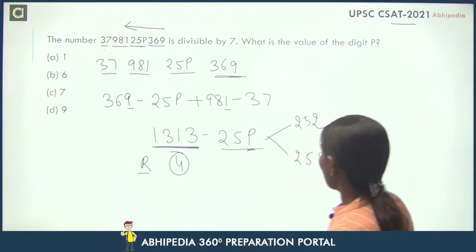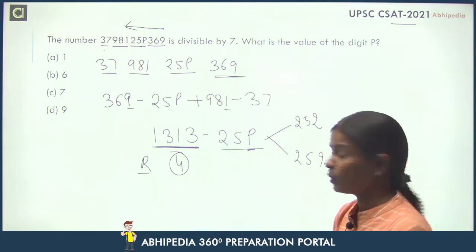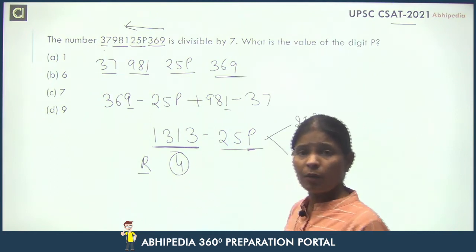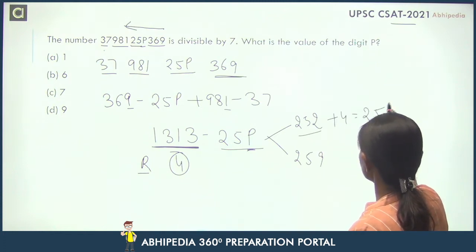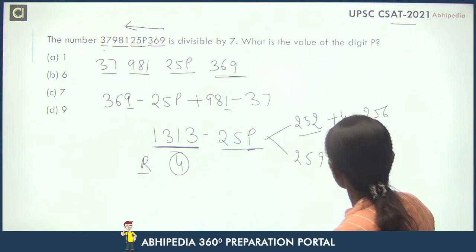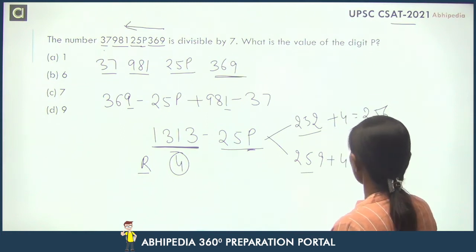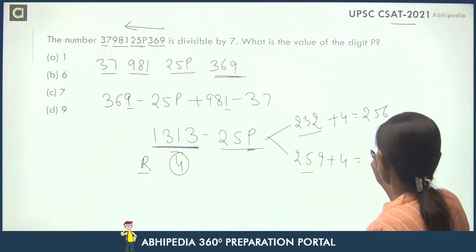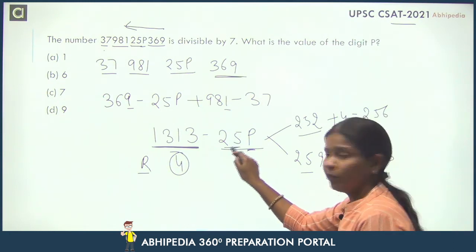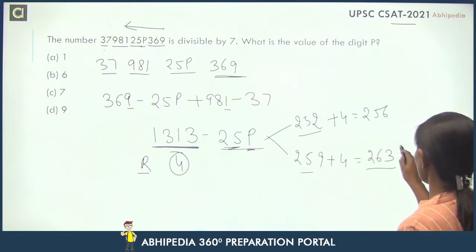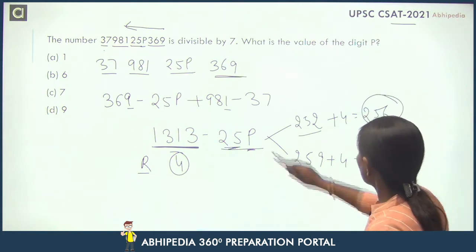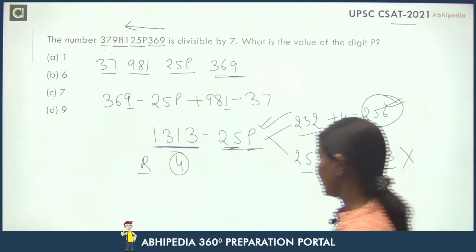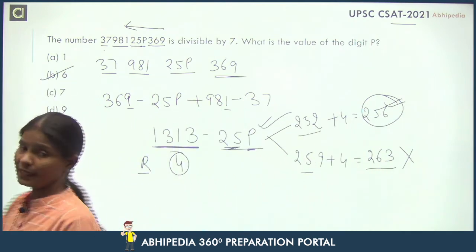Now let's see, we have to find which number. We have remainder 4, so we need to add 4. If I add 4 to 252, the value will be 256. And if I add 4 to 259, then the value will be 263. So this means we need 25P to equal 263 when we add 4. Therefore P equals 6, so your answer will be option B.